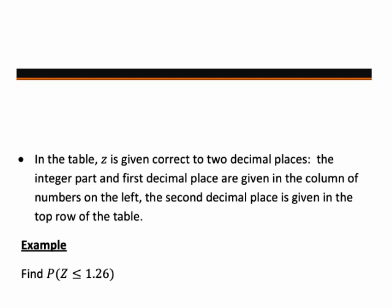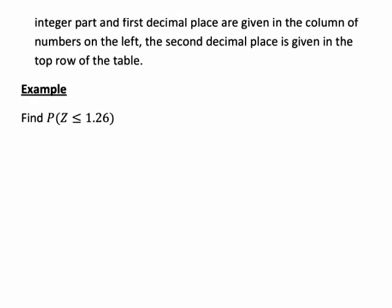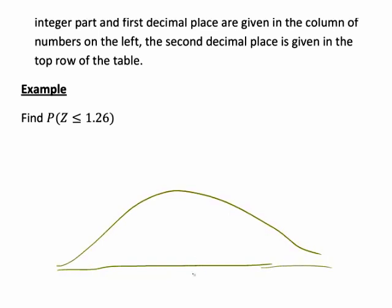Let's suppose that in a standard normal distribution, we wanted to find the probability of z being less than or equal to 1.26. So before we go to the table to work this out, let's again just draw a very rough sketch of what this situation looks like.